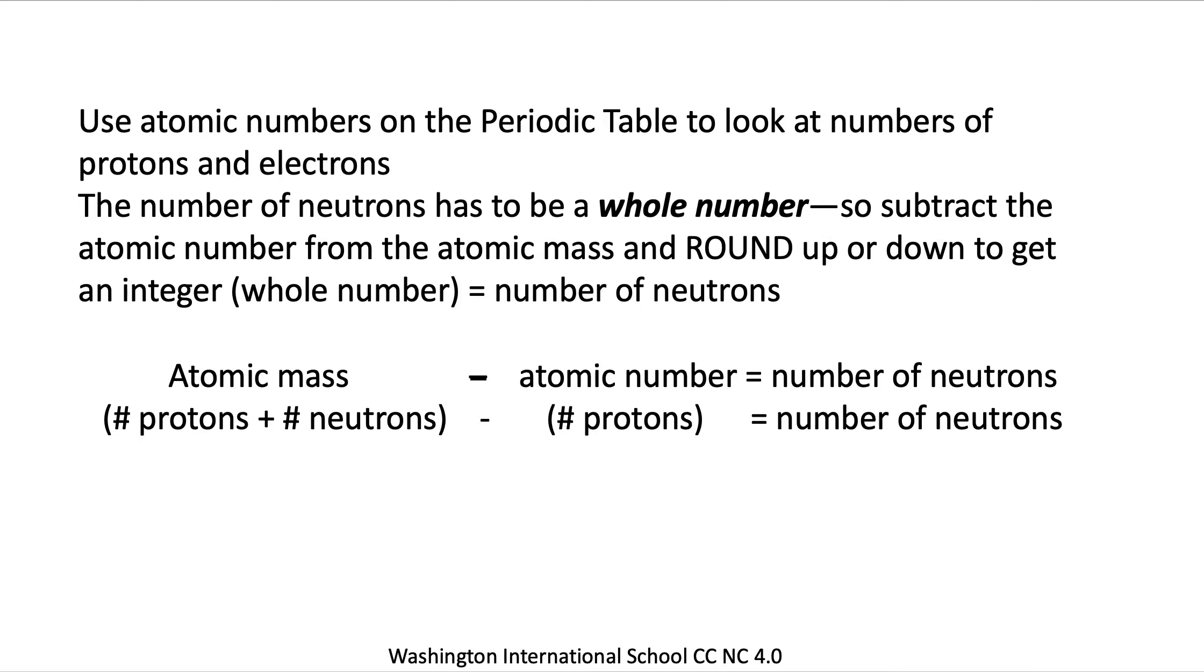You're going to use atomic numbers on the periodic table to look at the numbers of protons and electrons in your chosen element. The number of neutrons has to be a whole number. To get that, you'll subtract the atomic number from the atomic mass and round up or down to get that whole number. Look at the formula there: atomic mass, which equals the number of protons plus neutrons, minus the atomic number, which equals the number of protons, gives you the number of neutrons.